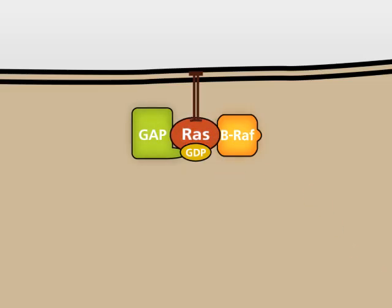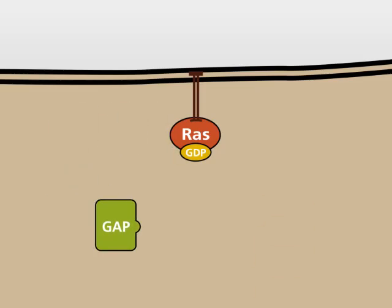GDP-bound RAS is no longer active and can no longer bind to BRAF. As a result, the MAPK signaling pathway is turned off.